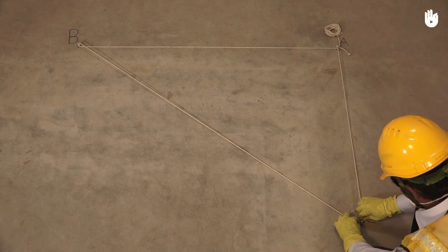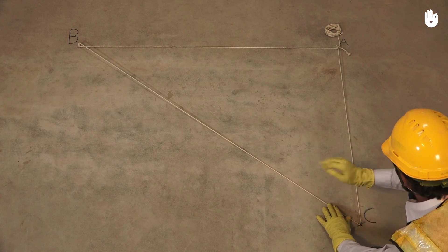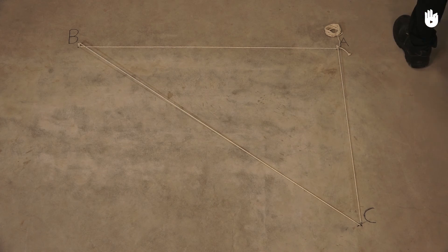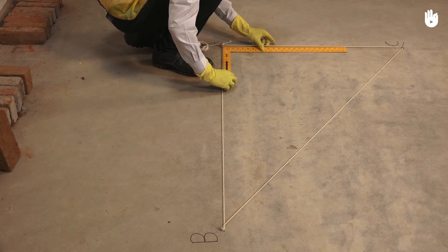Loop the string around the nail so that you now have a triangle ABC whose corners are tied together with a string. The angle can be rechecked using a Mason square.